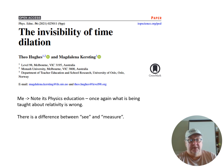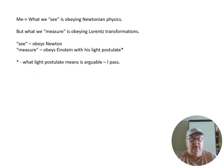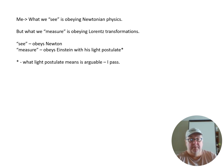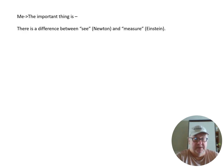What the paper is pointing out is there's a difference between c and measure — and this is not really taught to physics students. So once again, false relativity is being taught. What we see obeys Newtonian physics, and what we measure obeys Lorentz transformations. So c obeys Newton; measure obeys Einstein with his light postulate. The important thing is there is a difference between c, which is Newtonian, and measure, which is Einsteinian.